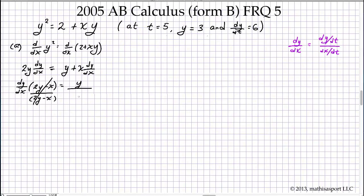That gives us dy/dx equals y over (2y minus x). This matches the form they gave us to derive, so we have confirmation that what we've done is correct.